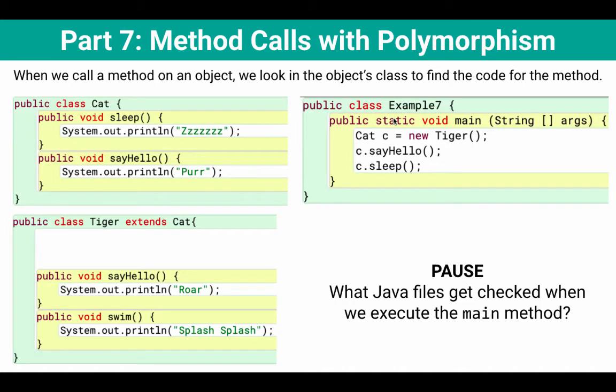Let's look at an example. I have example seven on the right, and I've got the cat class and the tiger class on the left.